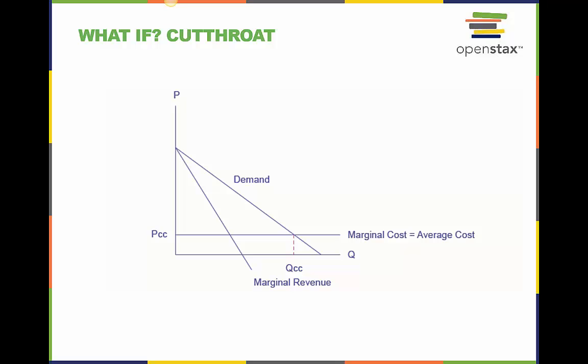Suppose now that the cartel breaks up and the oligopolistic firms compete as vigorously as possible by cutting the price and increasing sales. What will the industry quantity and price be? What will the collective profits be of all firms in the industry? Well, the firms will expand output and cut prices as long as there are profits remaining. The long-run equilibrium will occur at the point where average cost equals demand. As a result, the oligopoly will earn zero economic profits due to cutthroat competition, as shown in this figure.